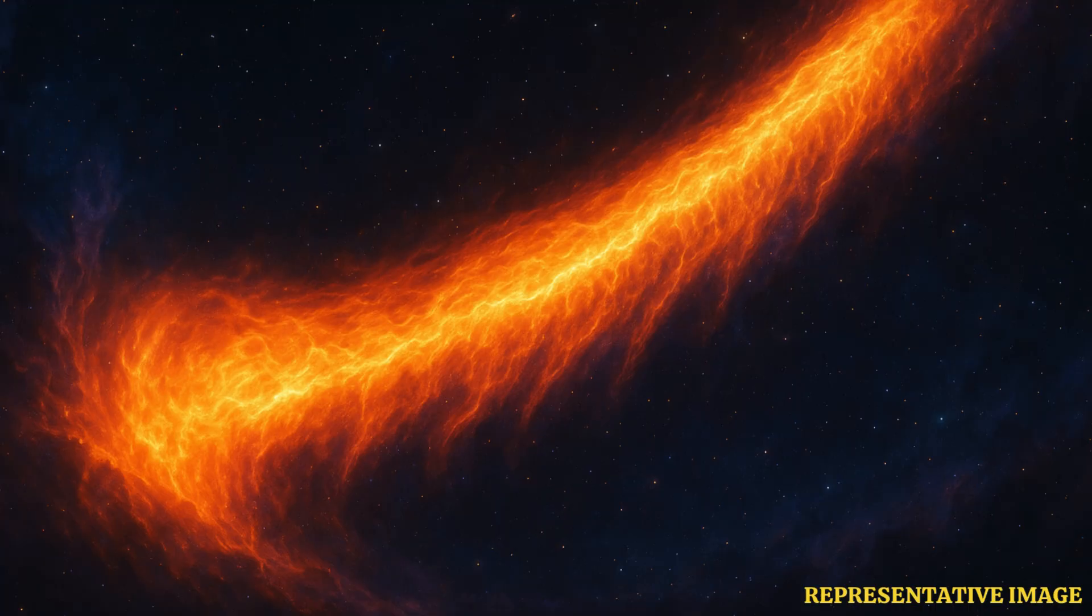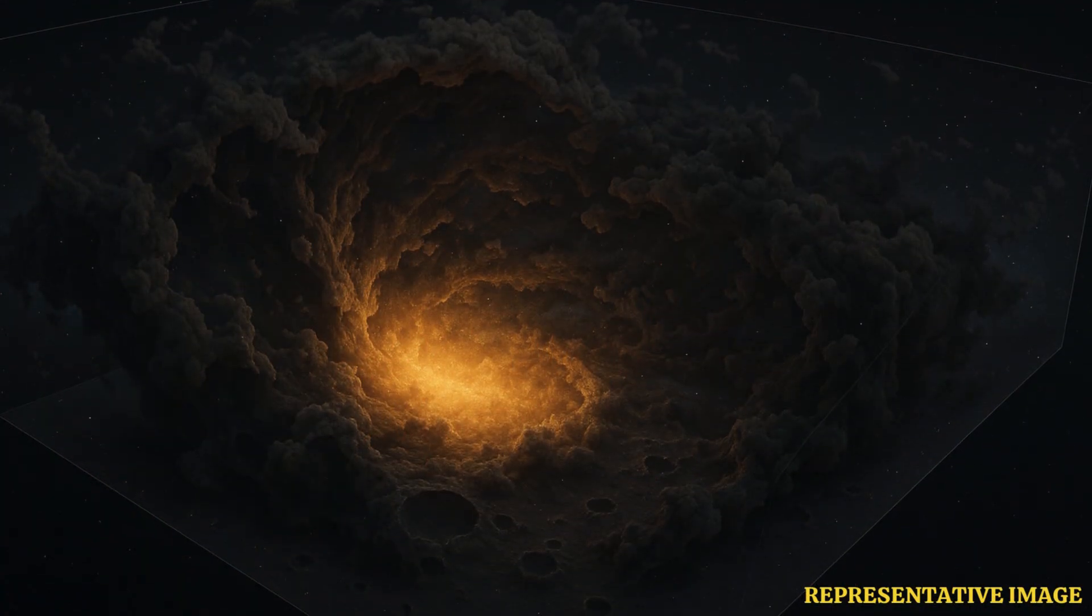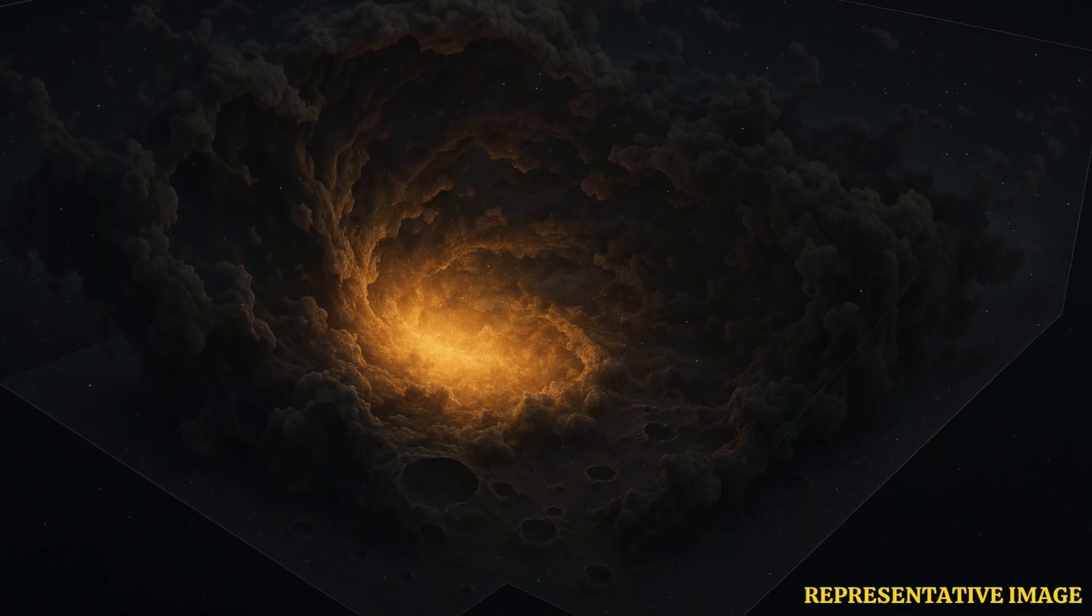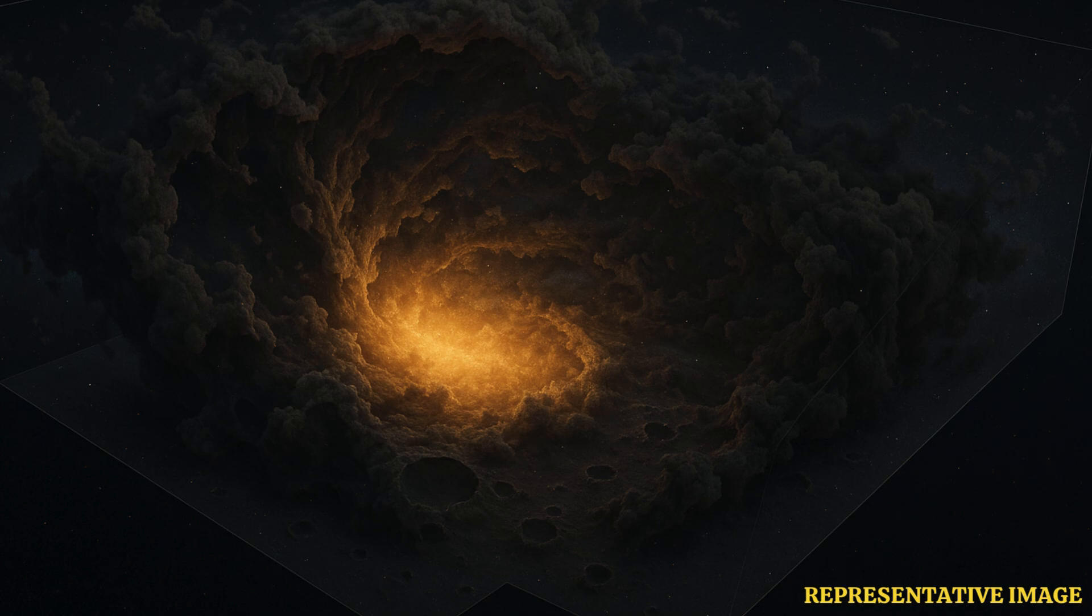The local hot bubble, or LHB, is a vast cavity of superheated gas roughly 1,000 light-years across, thought to have formed about 14 million years ago when a series of supernova explosions swept away surrounding interstellar gas and dust. This left behind a million-degree Kelvin plasma that glows in soft X-rays.